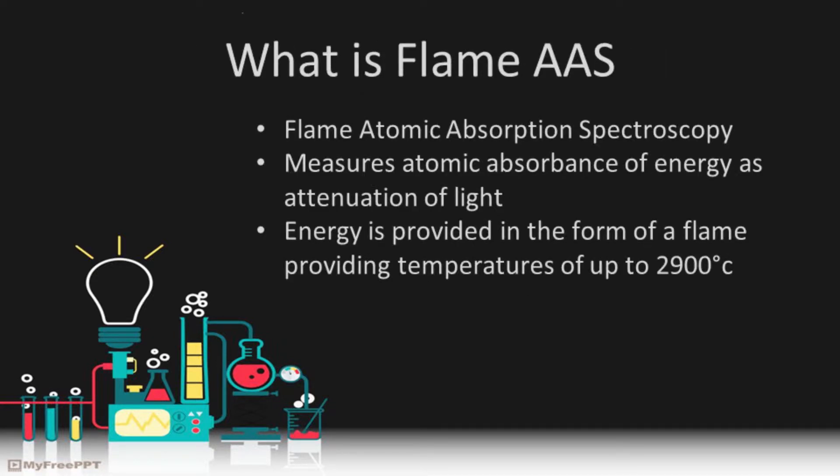Now we'll move on to the instruments used to analyze iron, starting with flame AAS. AAS stands for Atomic Absorption Spectroscopy, which refers to an instrument able to measure the amount of energy absorbed by atoms. The absorbances recorded are directly proportionate to the concentration of atoms within the optical path. The flame atomizes the sample and converts it to a gaseous state, usually using an air-acetylene flame at roughly 2300 degrees Celsius. When higher temperatures are required, such as for oxide-forming elements, temperatures of up to 2900 degrees Celsius can be reached using a nitrous oxide-acetylene flame.